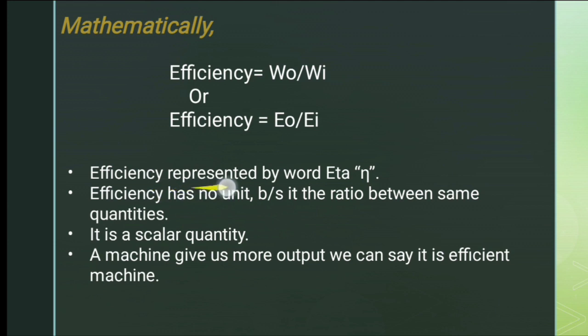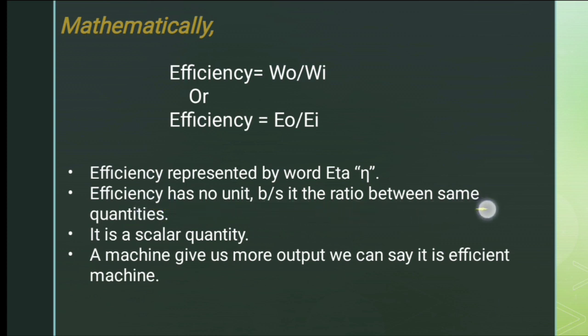Efficiency is represented by the Greek symbol ETA (η). ETA has no unit because efficiency is a ratio between two quantities of the same kind — output energy divided by input energy — so the units cancel out.